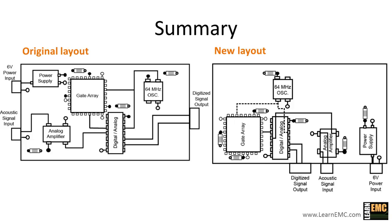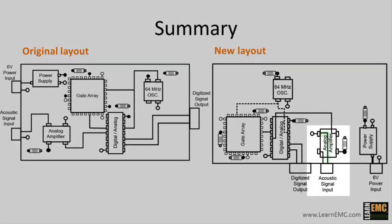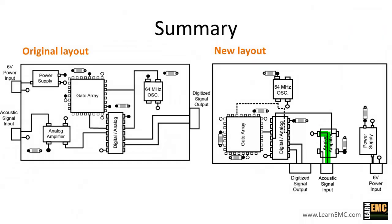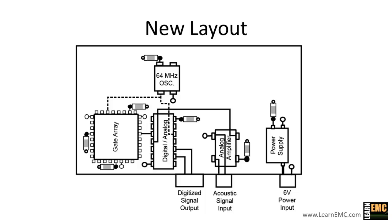We provided local decoupling capacitors for each active device. These capacitors share the via connecting the device to the power plane, which is the plane farthest from the component layer. This local decoupling allows each device to pull current from the closest decoupling capacitor first rather than from the power bus. And finally, we provided a dedicated trace for the return current of the unamplified acoustic signal, tying the trace to the amplifier ground pin. This was necessary because the acoustic signal is both low amplitude and low frequency, which makes it sensitive to interference from other signals using the ground plane as a return path. This new layout should easily meet radiated emissions requirements without a shielded enclosure.